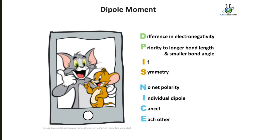Just remember this mnemonic: DP IS NICE. D stands for difference in electronegativity, P for priority to longer bond length and smaller bond angle, I for 'if symmetry,' and S for 'no net polarity — individual dipoles cancel each other.' Remember this mnemonic and you can solve any dipole moment based question. Thanks for watching.